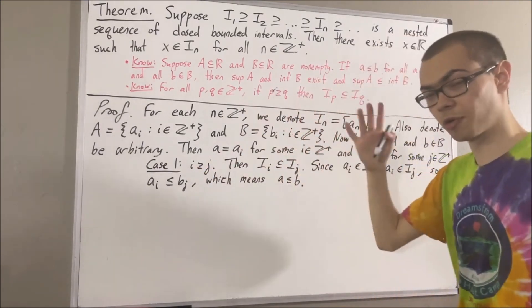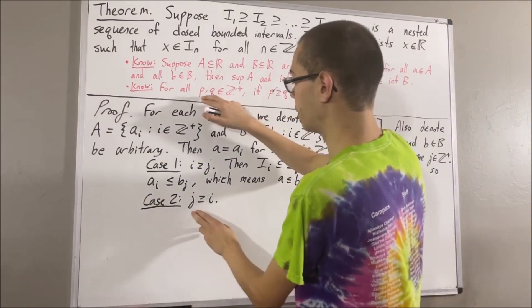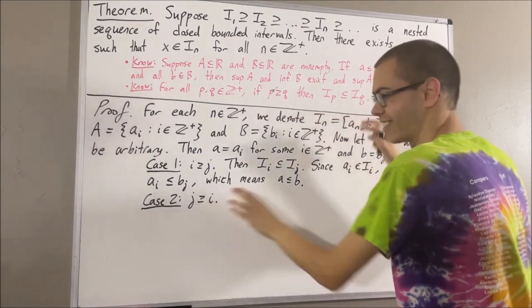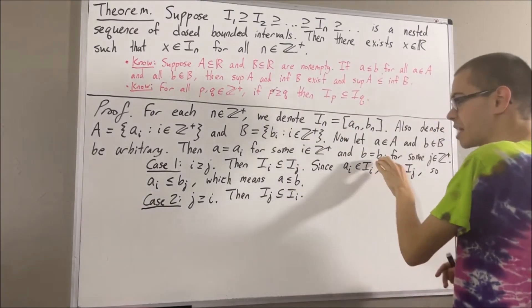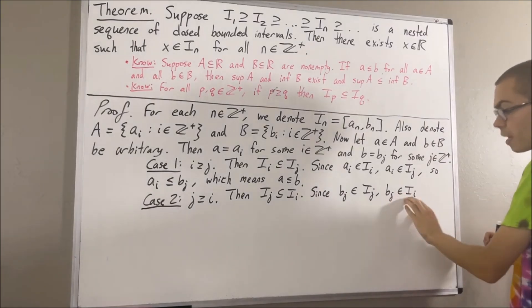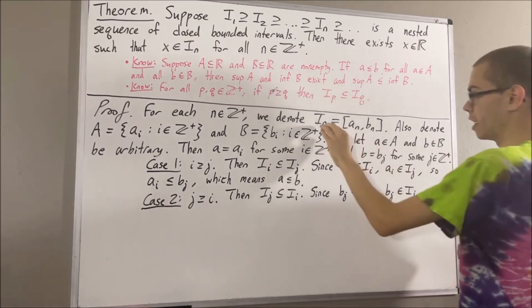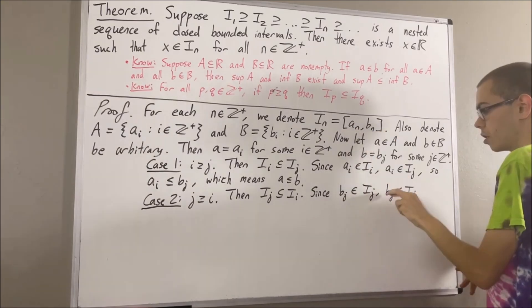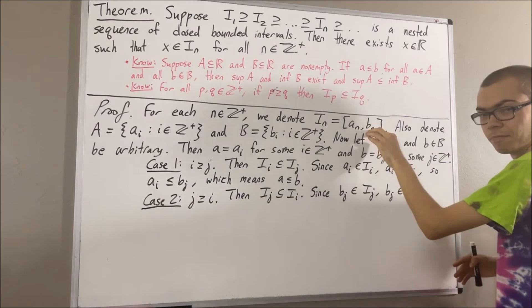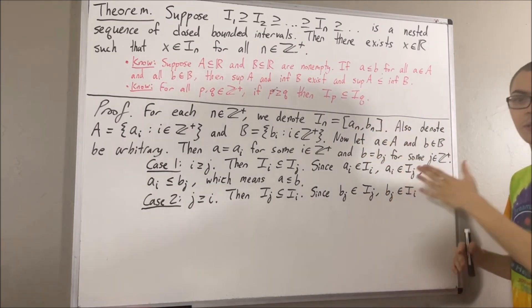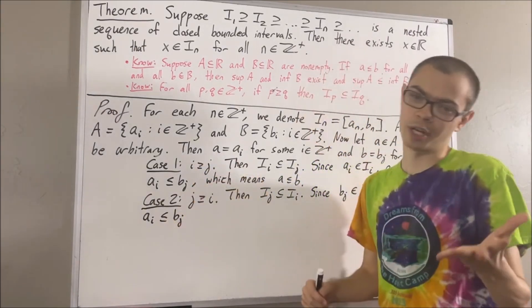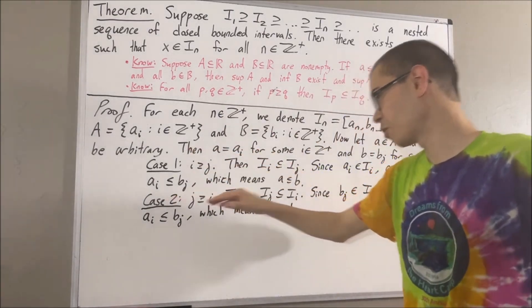Now let's move on to the case where j is greater than or equal to i. In this case, if we take p to be j and q to be i, since j is greater than or equal to i, it follows that Ij is a subset of Ii. Now, bj is an element of Ij, so it follows that bj is an element of Ii. What does it mean for bj to be an element of Ii? Ii is the interval whose lowest value is ai and whose largest value is bi. So to say that bj is an element of Ii means that ai is less than or equal to bj, which is less than or equal to bi. So in particular, ai is less than or equal to bj. Since ai equals a and bj equals b, this means a is less than or equal to b. So in either case, we have that a is less than or equal to b.